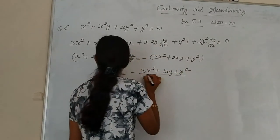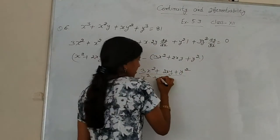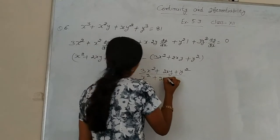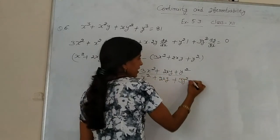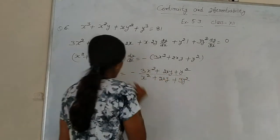So dy/dx equals negative of (3x² + 2xy + y²) divided by (x² + 2xy + 3y²). This is our answer.